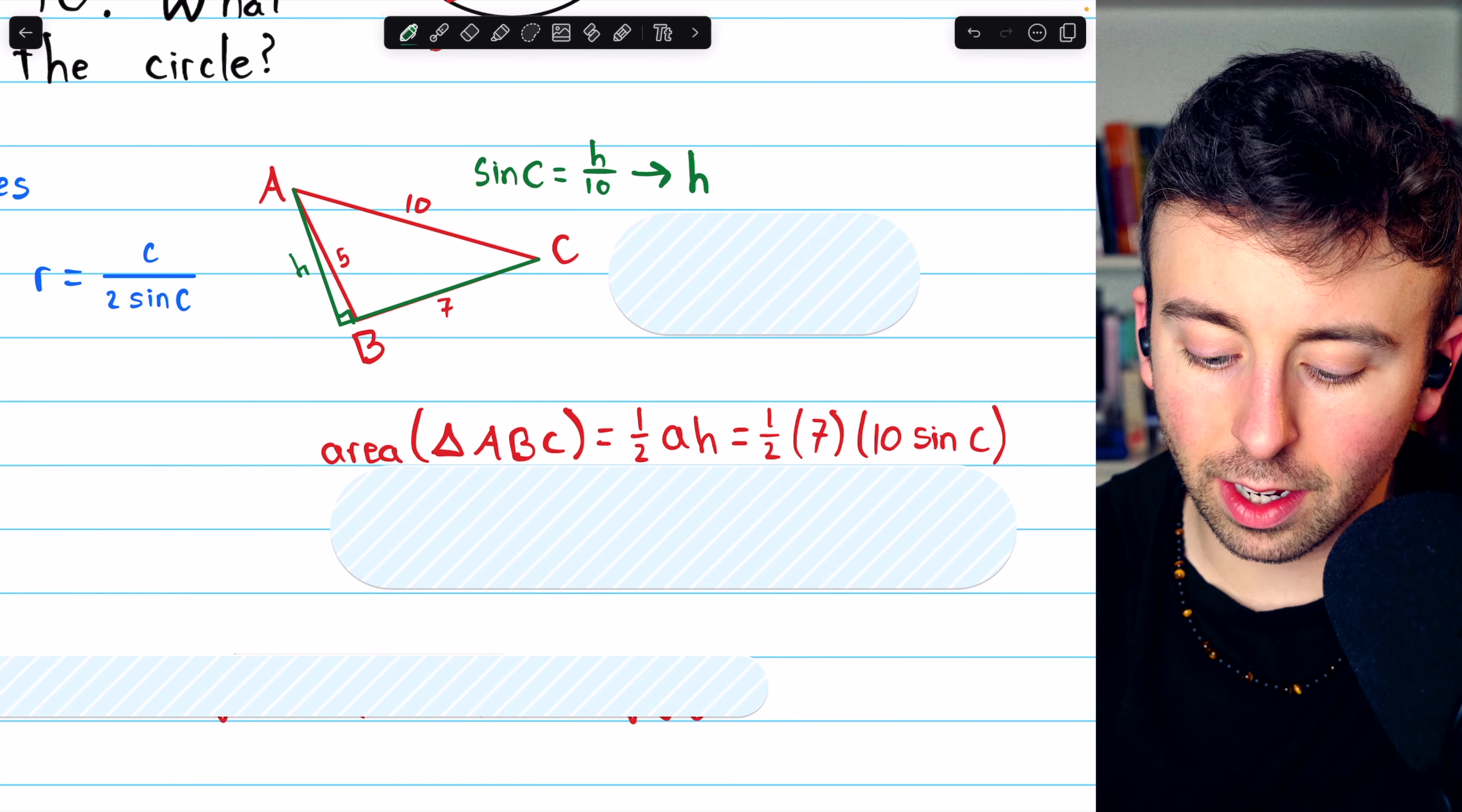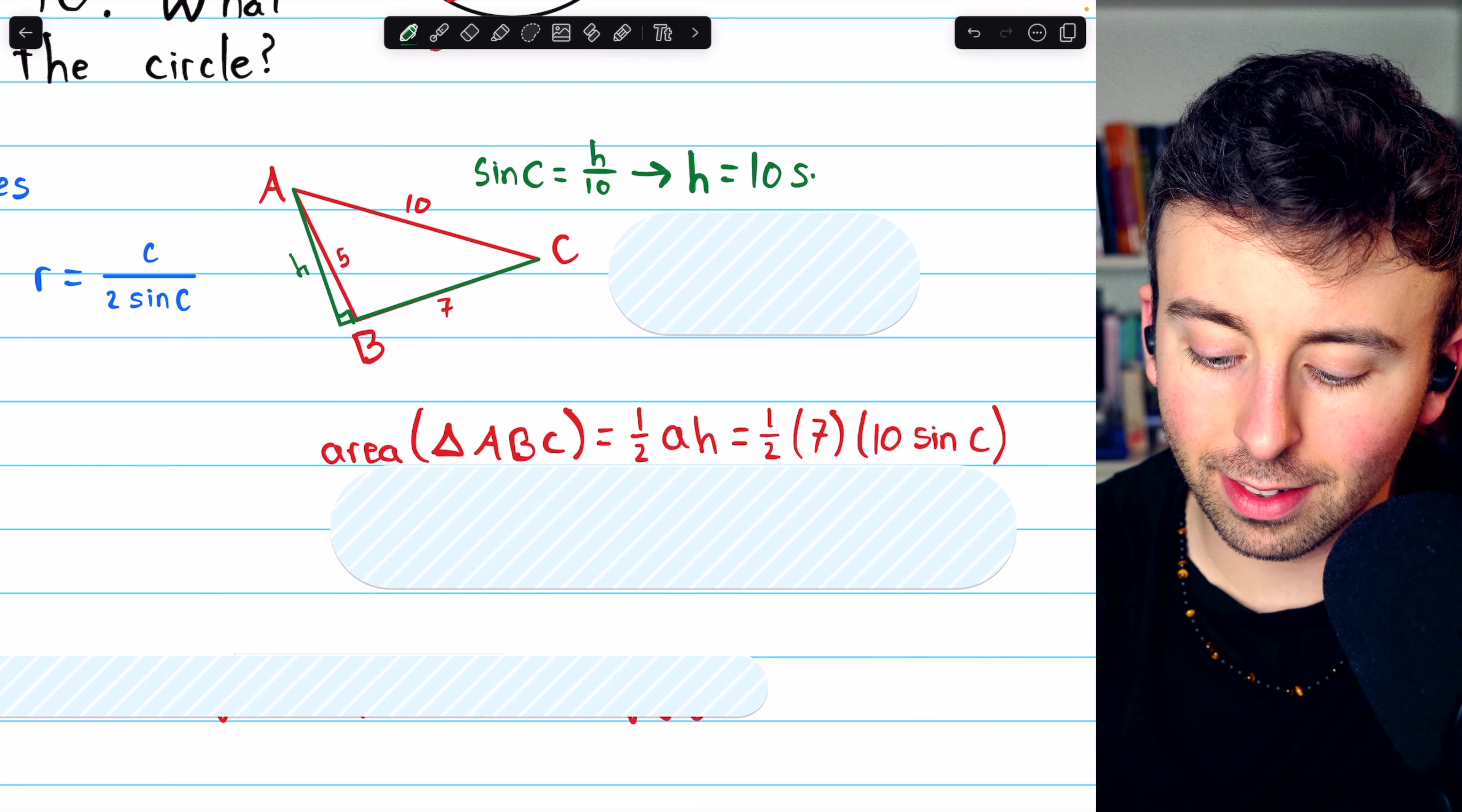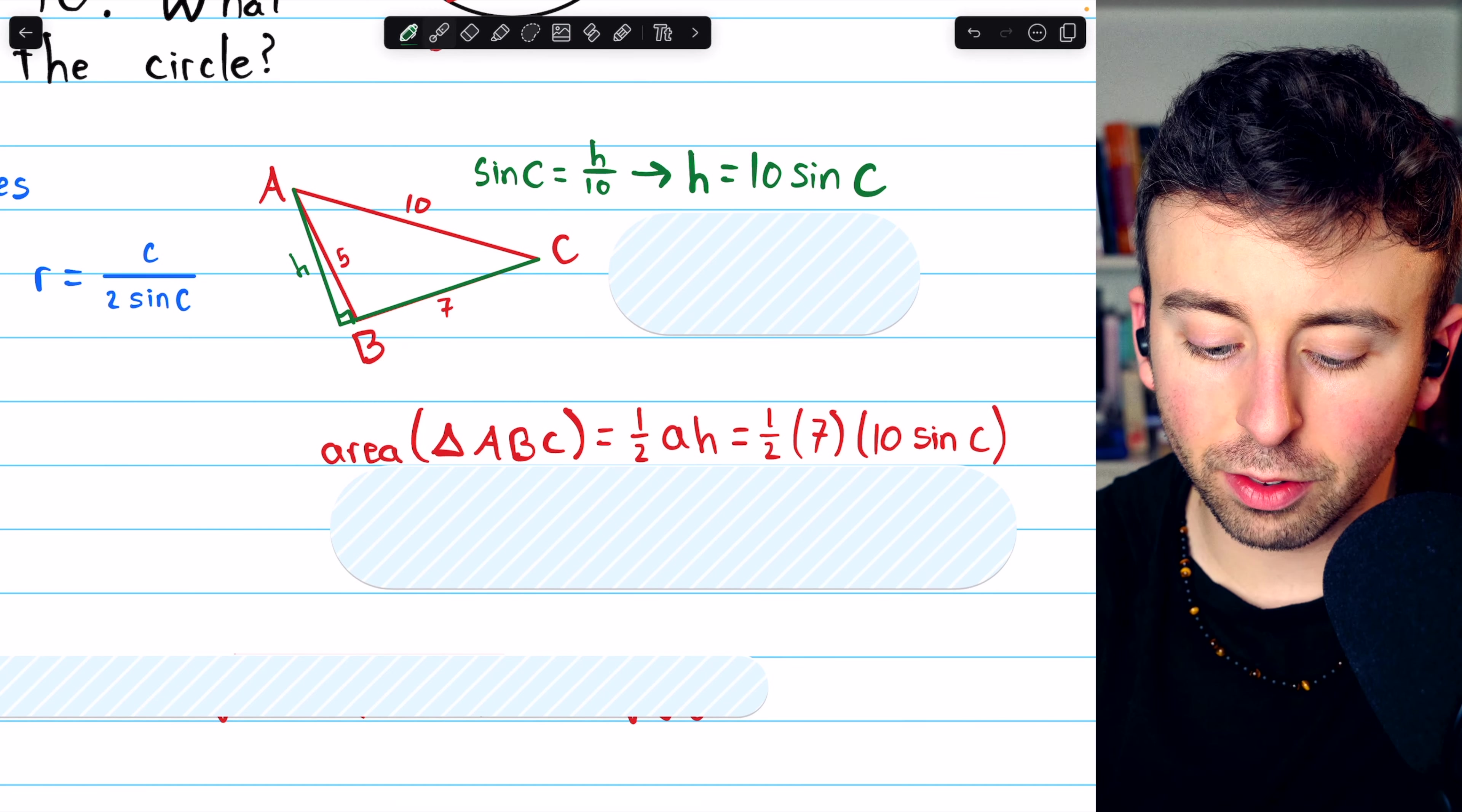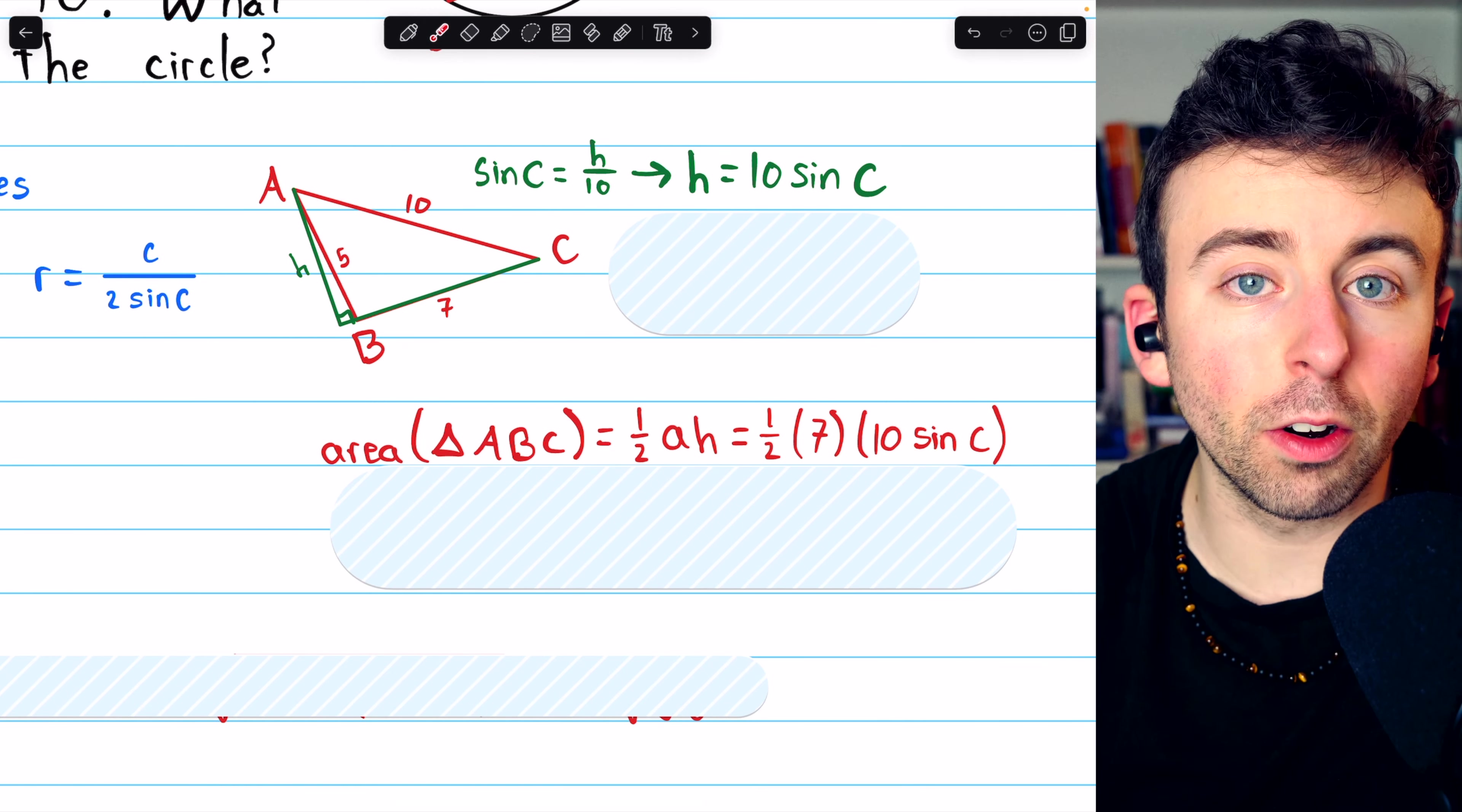This means that the height of the triangle is 10 sine C, and thus we can find the area in terms of sine.